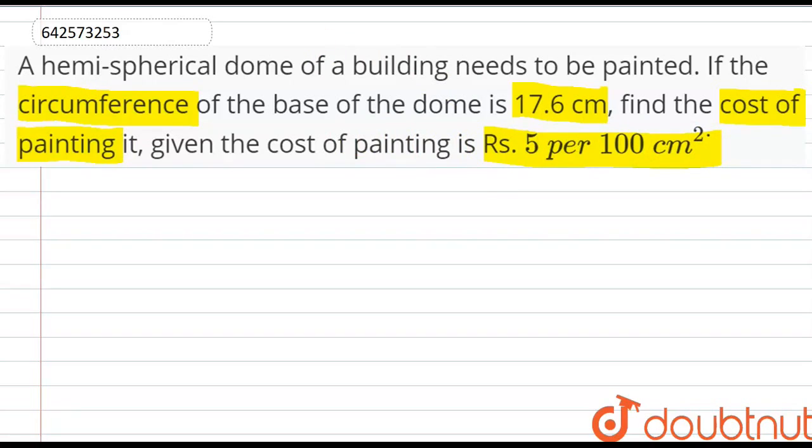Since only the rounded surface of the dome is to be painted, we need to find the curved surface area of the hemisphere. And it is also given to us that the circumference of the base of the dome is 17.6 cm.